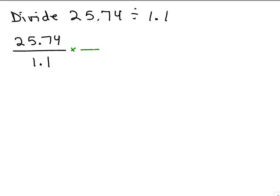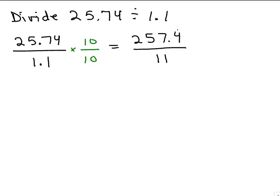When dealing with fractions you can multiply the numerator and denominator by the same thing. So if I multiply the numerator and denominator by 10, I get to move the decimal in the numerator one place to the right — that's 257.4 — and in the denominator I move it one to the right to get 11. Now you have a division problem where you're dividing by a whole number, which we know how to do. So we do 11 into 257.4.